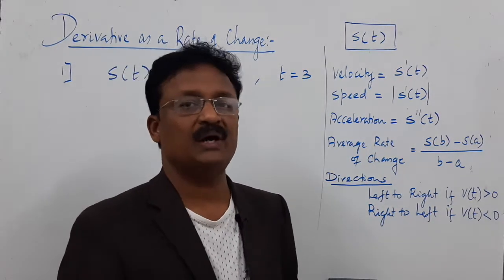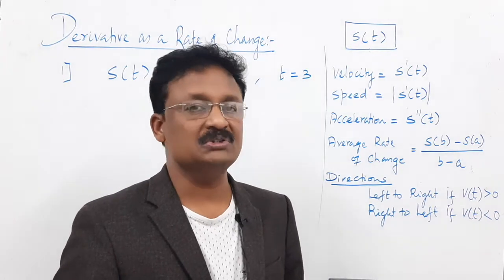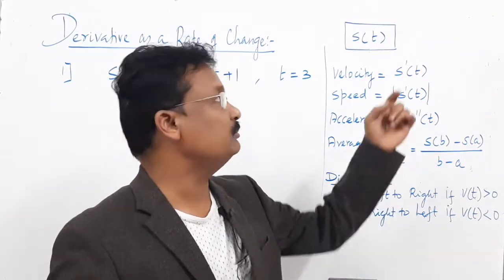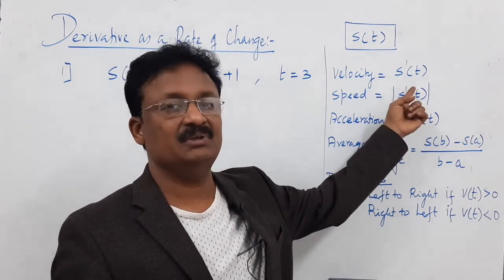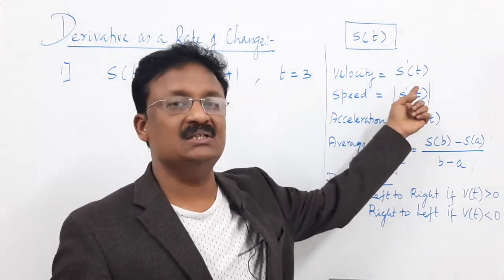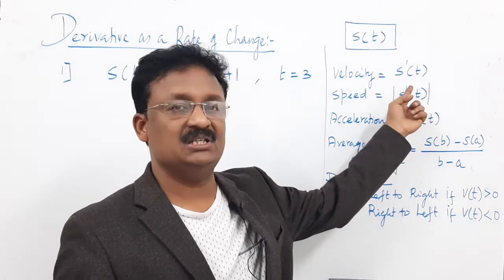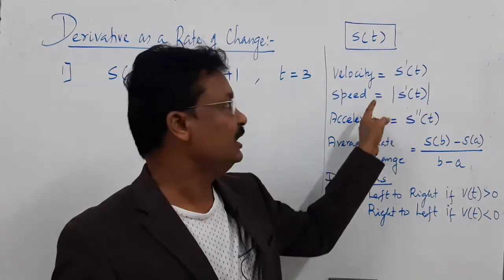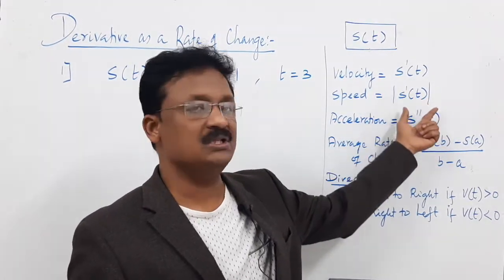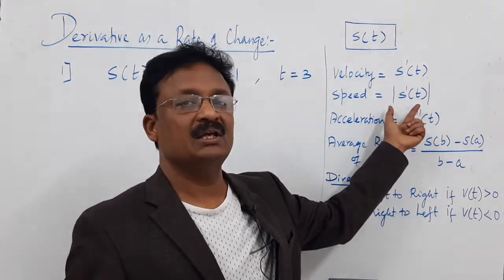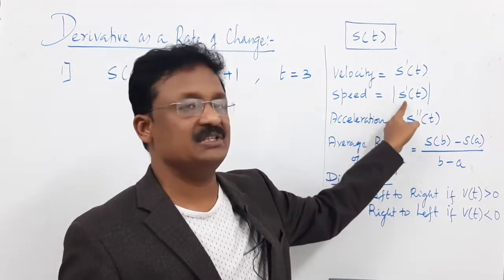Based on s of t, we can find velocity. Velocity is the first derivative: s dash of t, that is ds/dt — differentiate s with respect to time t. Speed is the second term: if you find the absolute value (modulus) of the velocity, you will get the speed, which is |s dash of t|.